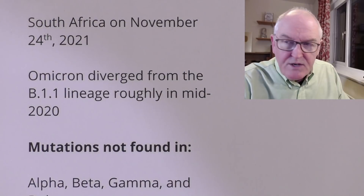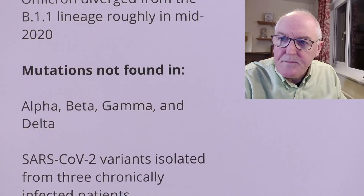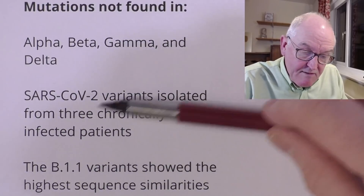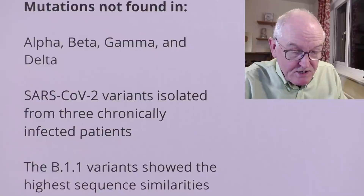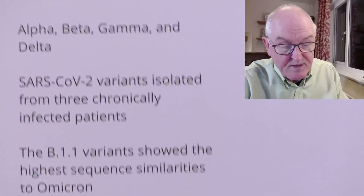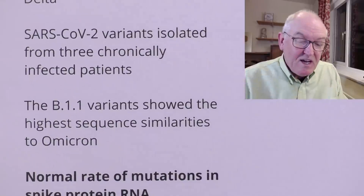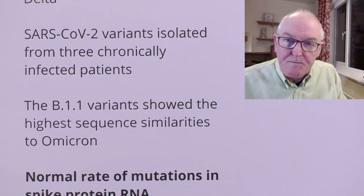Omicron has mutations which are not found in Alpha, Beta, Gamma, or Delta. It has mutations which are not found in people chronically infected with SARS-CoV-2 — separate mutations, unique to Omicron. And the B1.1.1 variant shows the highest sequence similarity to Omicron. It's most similar to the original Wuhan variant and not to the other ones.